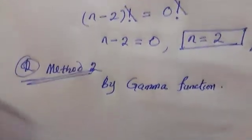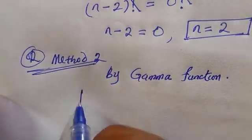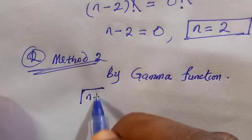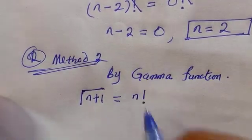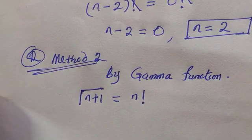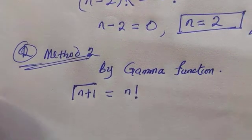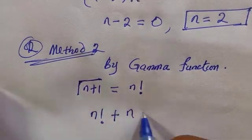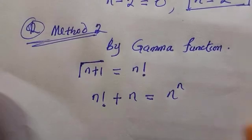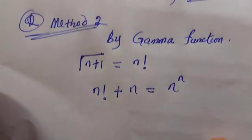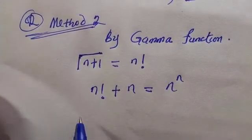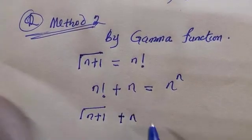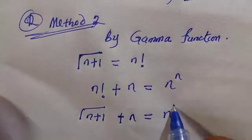We recall that gamma of (n plus 1) equals n factorial. Applying this to the original equation — n factorial plus n equals n raised to power n — we rewrite it as: gamma(n plus 1) plus n equals n to the power n.